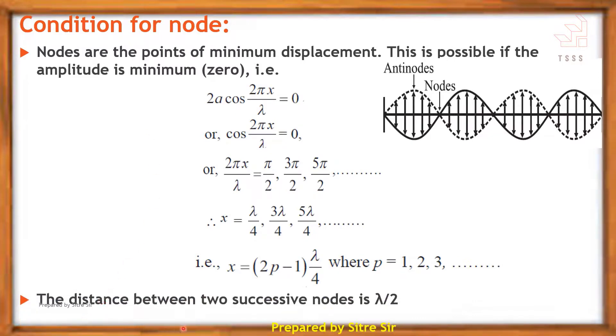The distance between two successive nodes is λ/2.